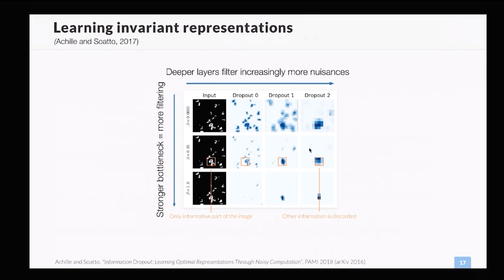Using this information bottleneck loss to optimize the noise variance, we end up with a regularized loss function for a deep network that finds the optimal bottleneck — minimizing information and giving a representation invariant to nuisances. In an experiment classifying digits in the middle of clutter, we can visualize how much information about the input is transmitted through each dropout layer. Each layer learns to drop more and more irrelevant information about the clutter, and only task-relevant information is kept in the last layer. By changing the parameter beta controlling the information bottleneck, we can control how aggressively the network discards nuisance variability.